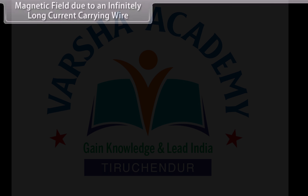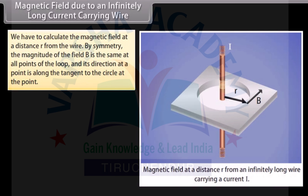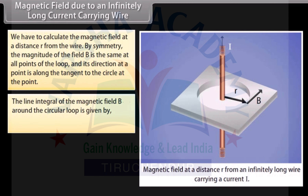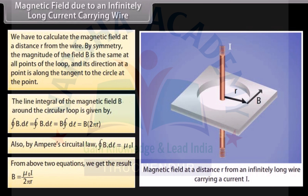For the magnetic field due to an infinitely long current carrying wire, we calculate the magnetic field at a distance R from the wire. By symmetry, the magnitude of the field B is the same at all points of the loop, and its direction at a point is along the tangent to the circle. The line integral of B around the circular loop is given by B times 2 pi R. By Ampere's Circuital Law, the closed integral of B dot dL equals mu naught I. From these two equations, we get B equals mu naught I divided by 2 pi R.